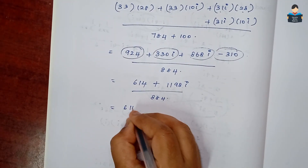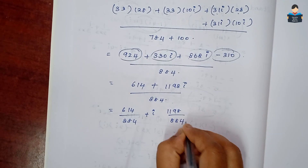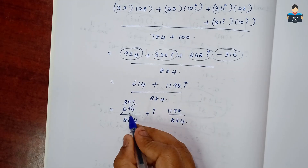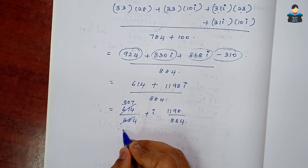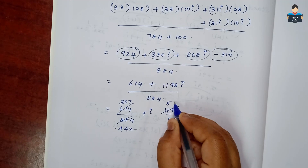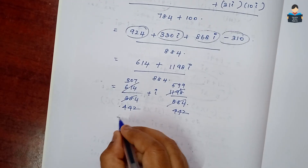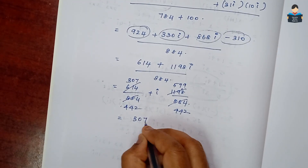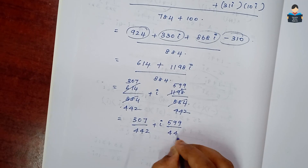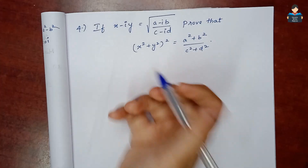Collecting constant terms: 924 − 310 = 614. Collecting i terms: 330i + 868i = 1198i. So we get 614/884 + i(1198/884). Dividing by 2: 307/442 + i(599/442). So the standard form is 307/442 + i × 599/442.